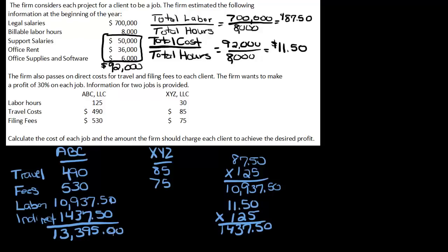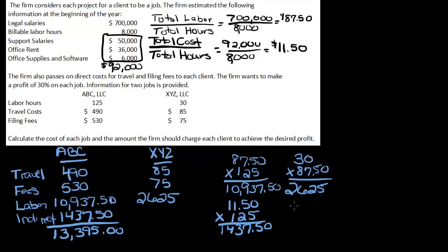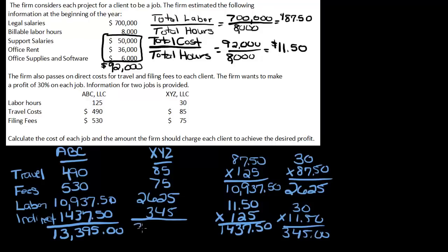Now let's go back and do XYZ. For XYZ we have 30 hours. To get the labor, we do times $87.50, which equals $2,625. So labor cost is $2,625. We do the same thing for indirect costs: 30 hours times $11.50 equals $345. So total cost for XYZ is $3,130.